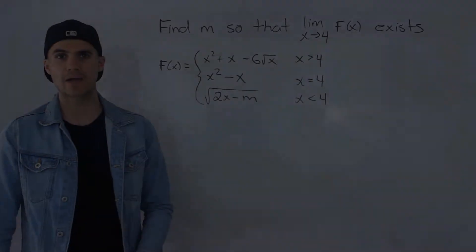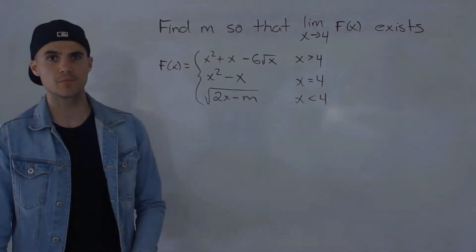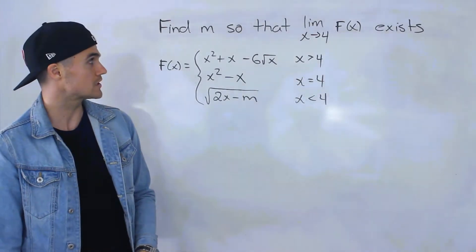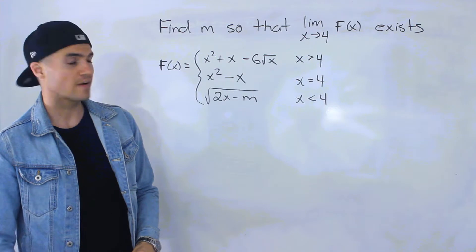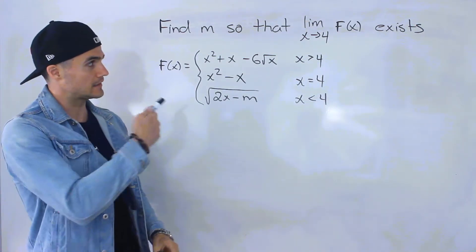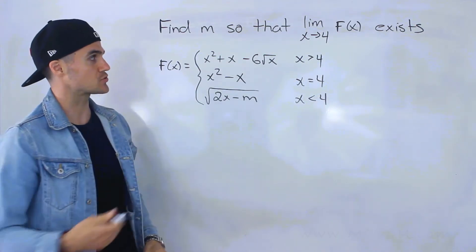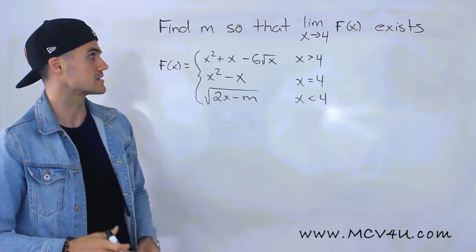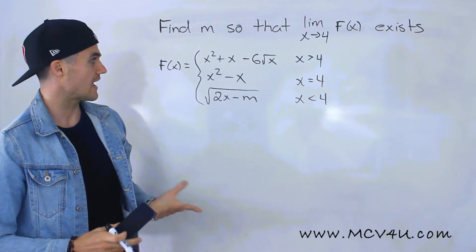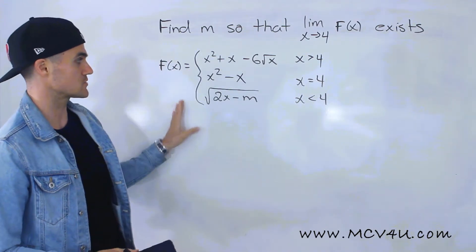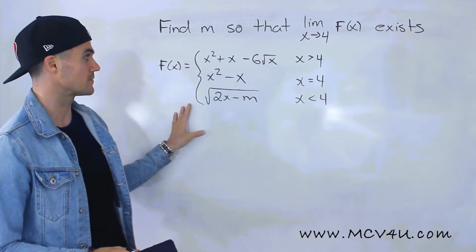Welcome back. Patrick here, moving on to the next question. We have to find the constant m so that the limit as x approaches 4 of f of x exists. Notice that f of x is defined by this piecewise function here.